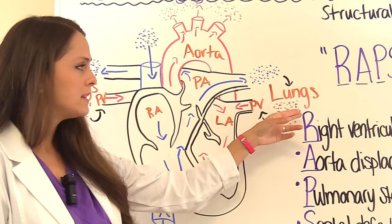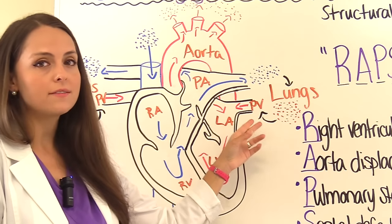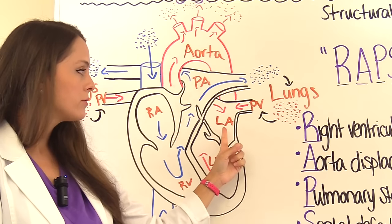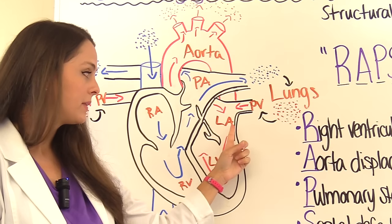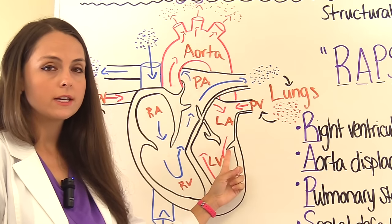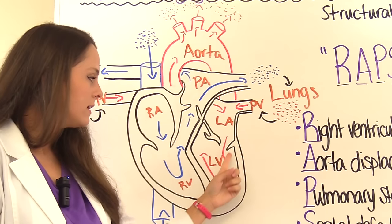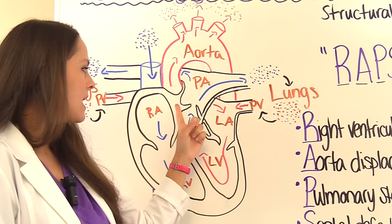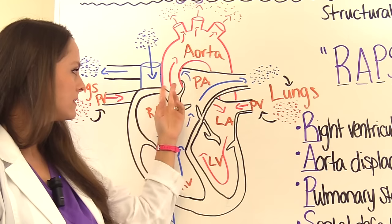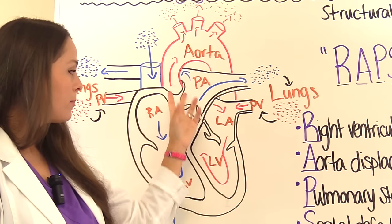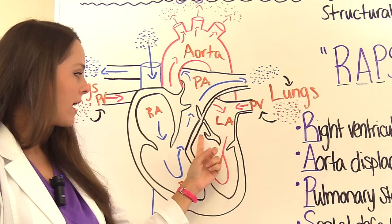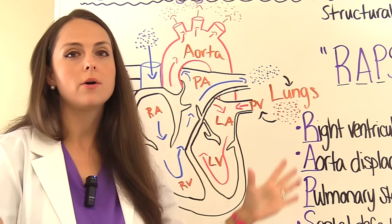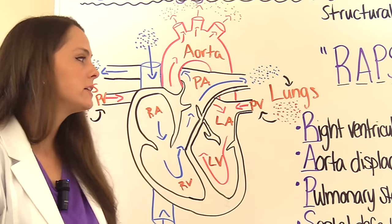Freshly oxygenated blood enters the left side of the heart through the pulmonary vein, flows down through the left atrium, through the bicuspid (mitral) valve, then into the left ventricle. From there it is squeezed up through the aortic valve into the aorta and distributed throughout the body, replenishing organs and tissues with oxygenated blood.